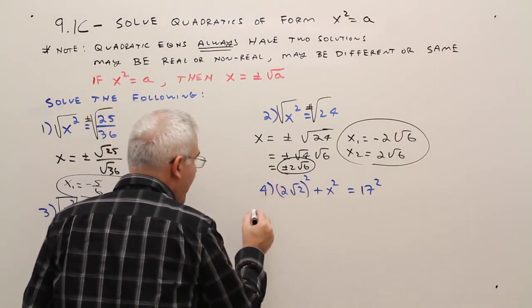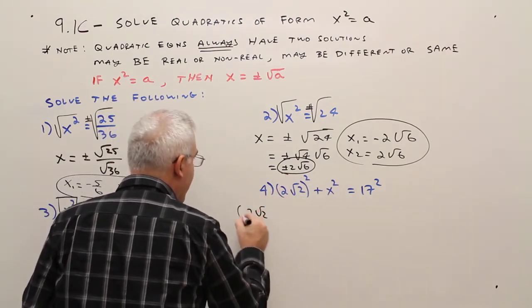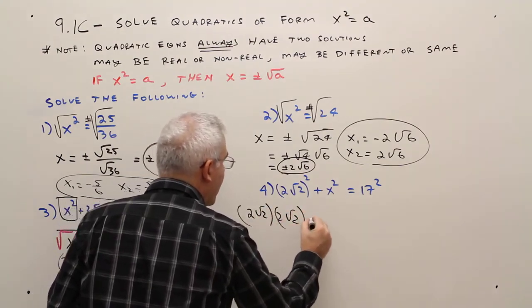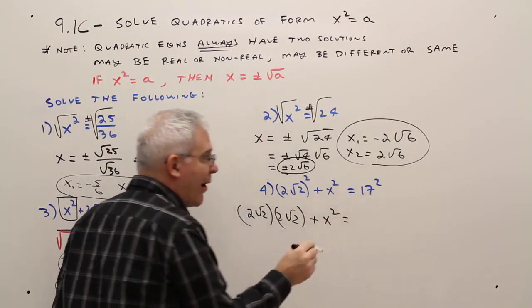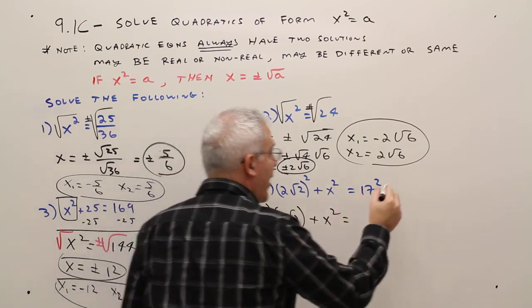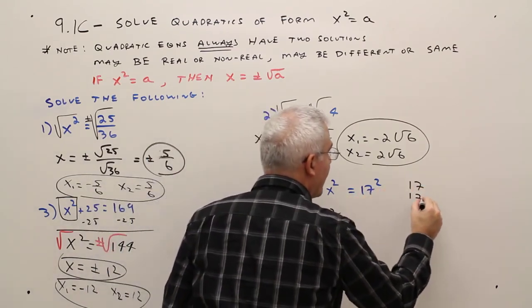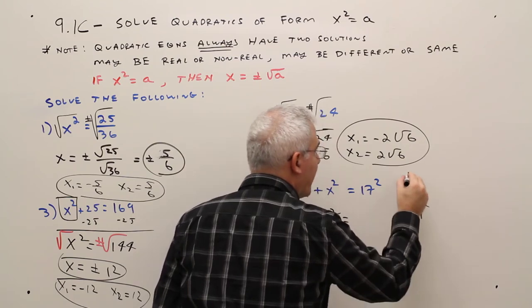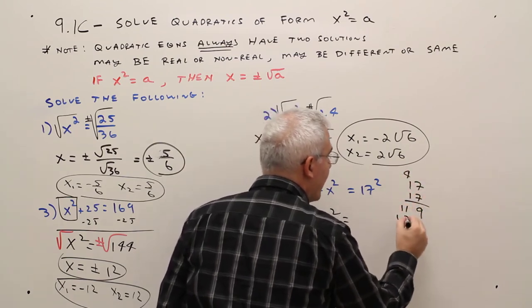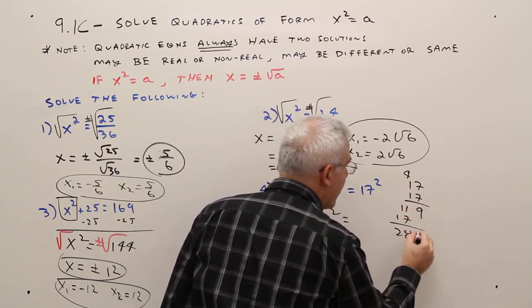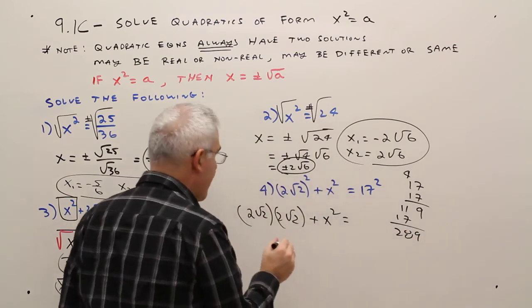So I'm going to write 2 radical 2 times 2 radical 2 plus X squared equals 17 squared. If you forgot 17 squared, you can just multiply it out really quickly: 7, 11, 17 gives 289.